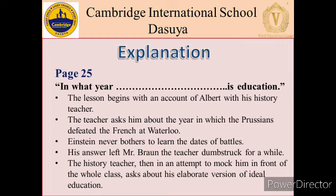The teacher concludes that if Einstein does not see any point in grasping facts, then he should also not be a believer and follower of education. Albert very clearly replies that he is undoubtedly vested in the idea of education, but according to him merely digesting facts is not education. The history teacher then, in an attempt to mock him in front of the whole class, asks him about his own theory of education.